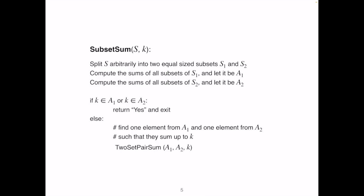So here is the pseudocode algorithm for subset sum. We create two new sets, A1, A2. We can quickly check if k is contained in A1 or in A2. Otherwise, we call the two-set pair sum algorithm we discussed previously, and we search two elements, each from A1 and A2, that can sum to k.